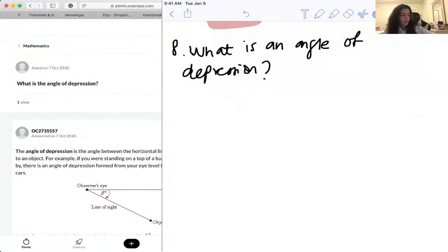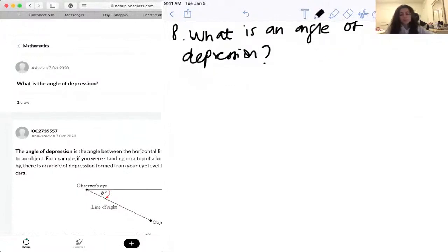This is a little bit of trig, and basically what an angle of depression is, always think of it when you're kind of looking down on something.